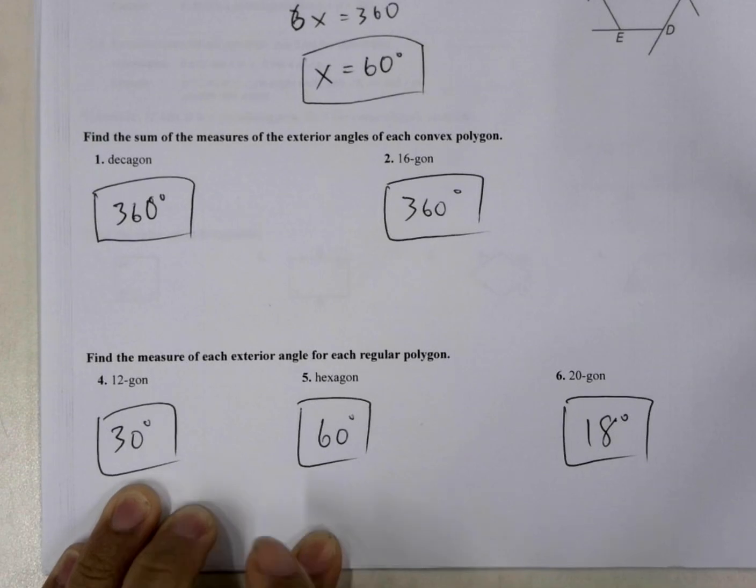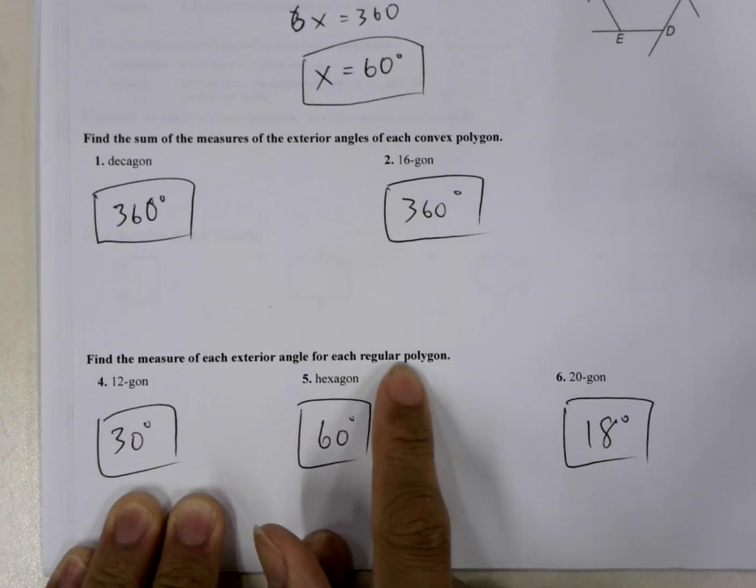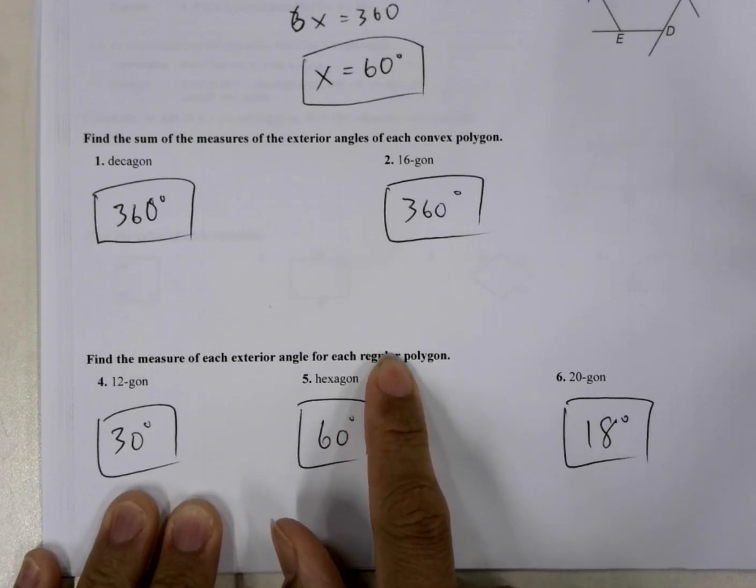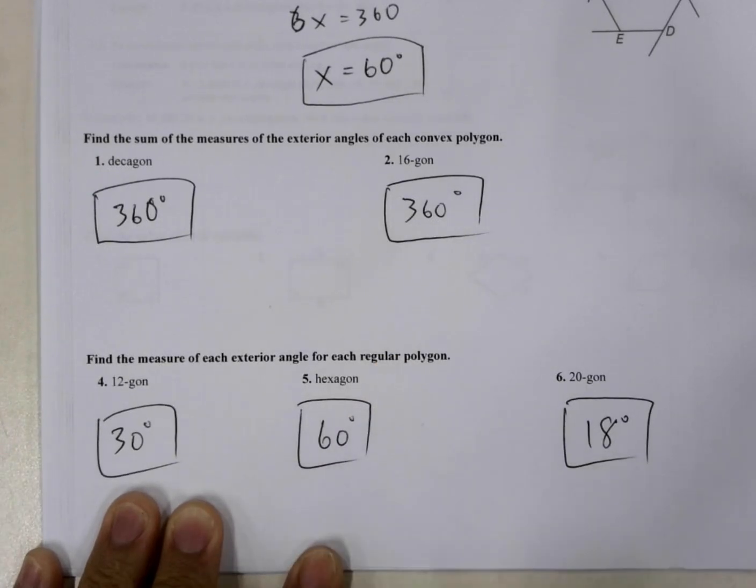And so to do that, oh, and here it's a regular polygon, right? That's key. That's important, which means that all the sides are the same, which means all the measures of the interior angles are the same, and the measure of all the exterior angles are the same.